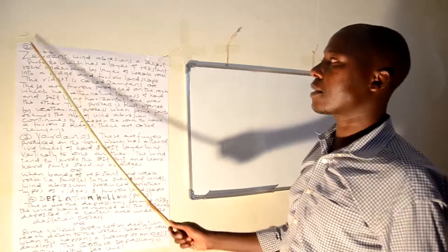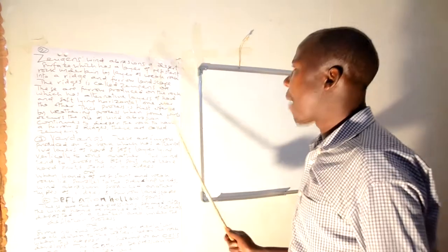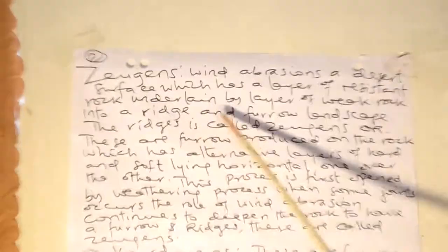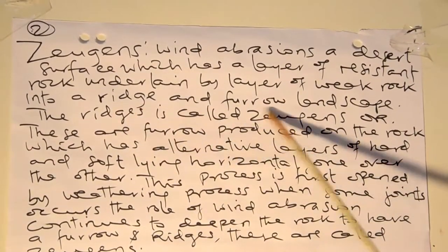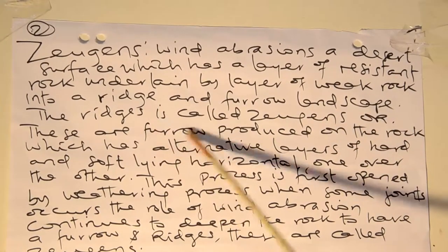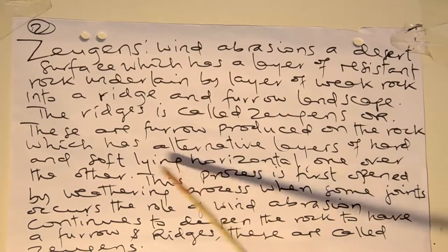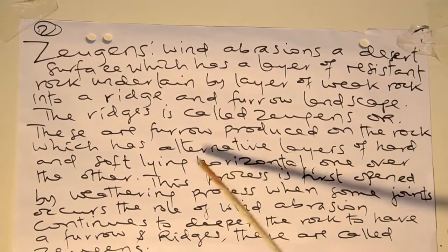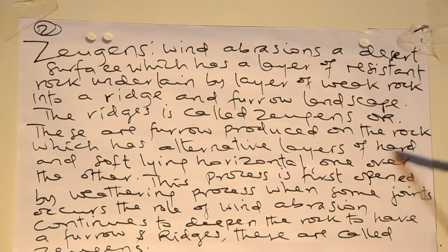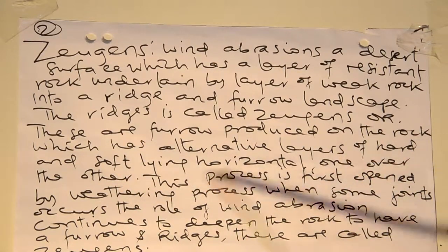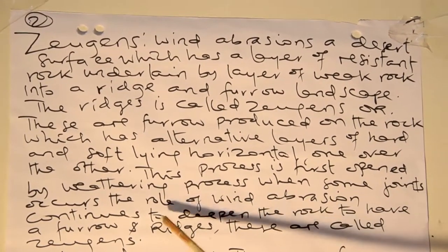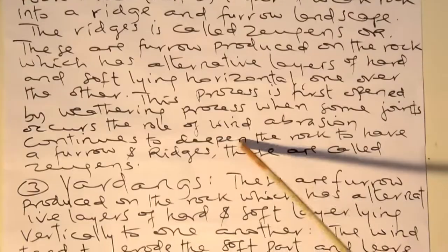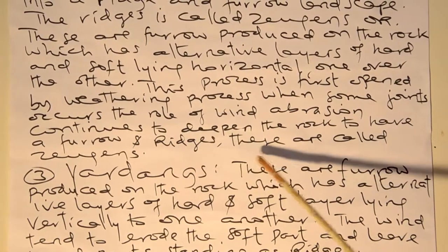The second feature is Zeugen. Zeugen refers to wind ablation at a desert surface which has layers of resistant rock, cutting through weak rock layers into ridges and furrows landscape. The ridges are called Zeugen. These are furrows produced on rock which has alternating layers of hard and soft lying horizontally, one over the other. This process first happens by weathering, and then wind ablation deepens the furrows and ridges.